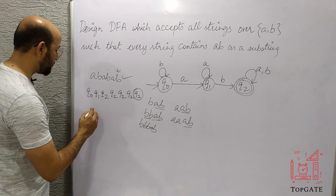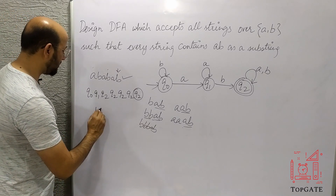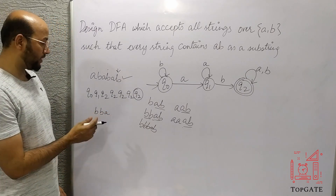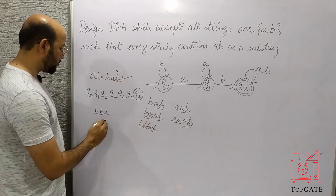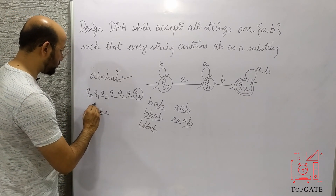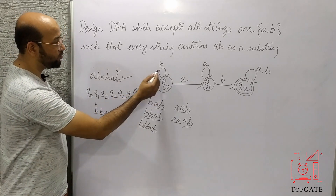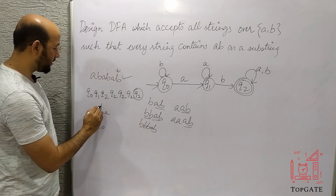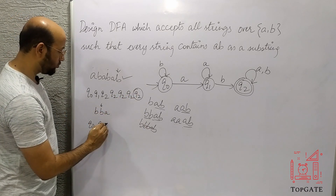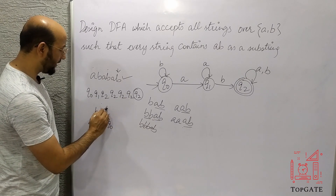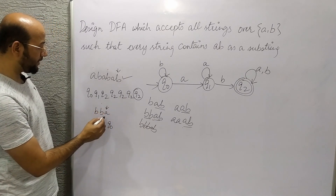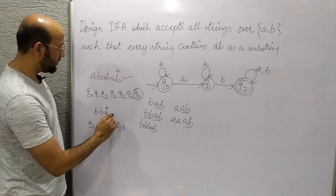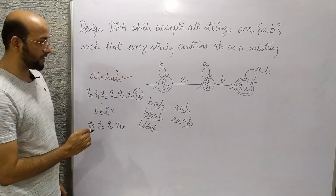Now let's take a wrong string: 'BBA'. There is no AB in this string, so it should not be accepted. Starting at initial state q0, pointer on first 'b'. At q0, 'b' applied — I stay at q0. Pointer moves to next 'b'. At q0, 'b' applied — I stay at q0. Pointer moves to 'a'. At q0, 'a' applied — I move to state q1. The string is completed but q1 is not my final state, therefore this string is rejected by this DFA.